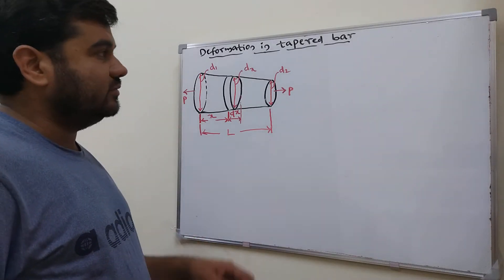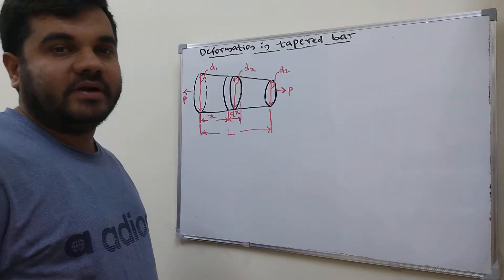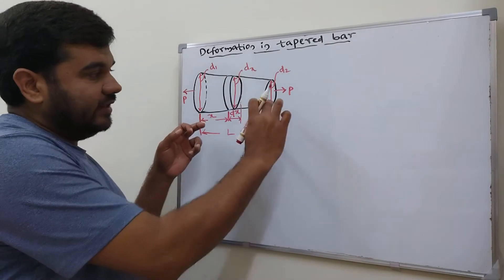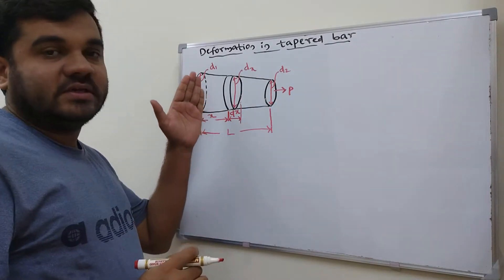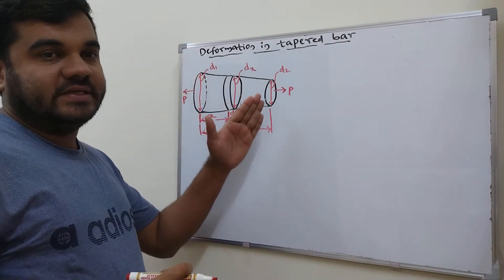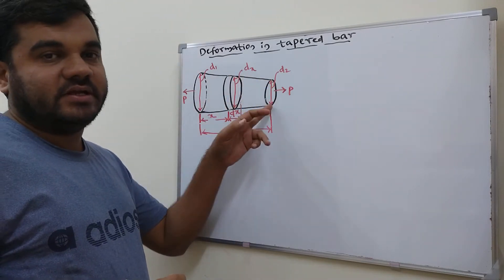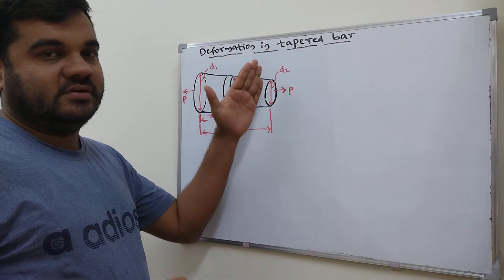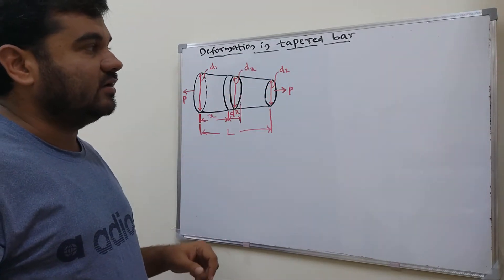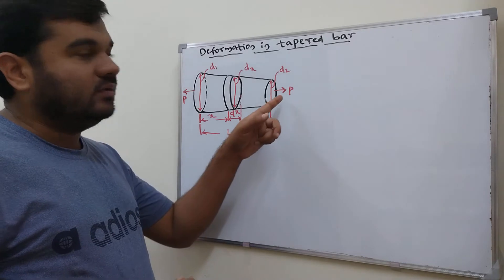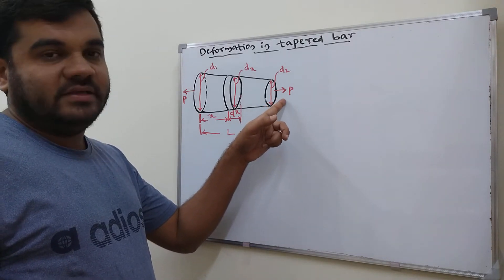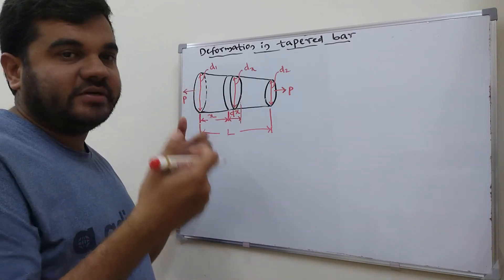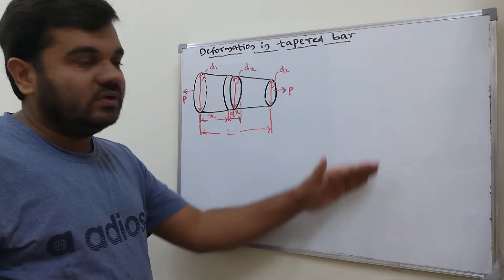In this video we will find out the deformation in a tapered bar. A tapered bar is a solid bar where the cross-sectional area decreases along its length — one end is big and the other end is small, so the diameter varies. If this bar is subjected to an axial tensile load P, we need to derive how much change in length, i.e., deformation, will occur.